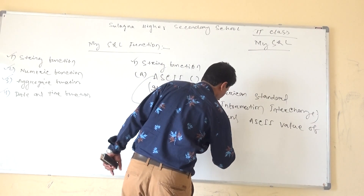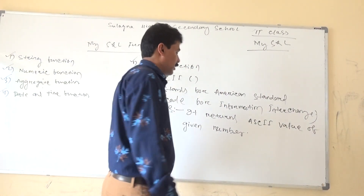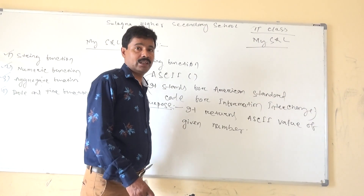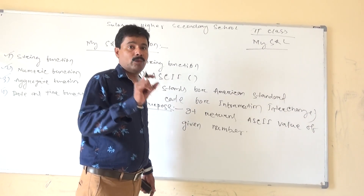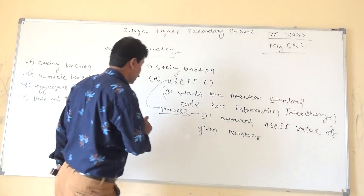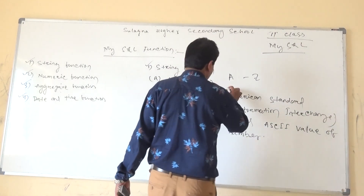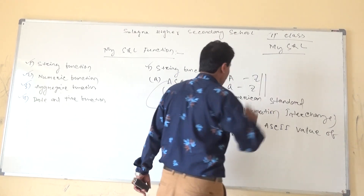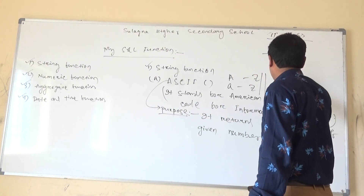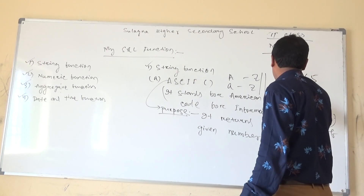The ASCII value and event number — if you look at the keyboard, you can see the alphabet keys. Capital letters have a small number; it has a secret number. The ASCII value: A to Z — capital A has the value 65, capital B has the value 66.